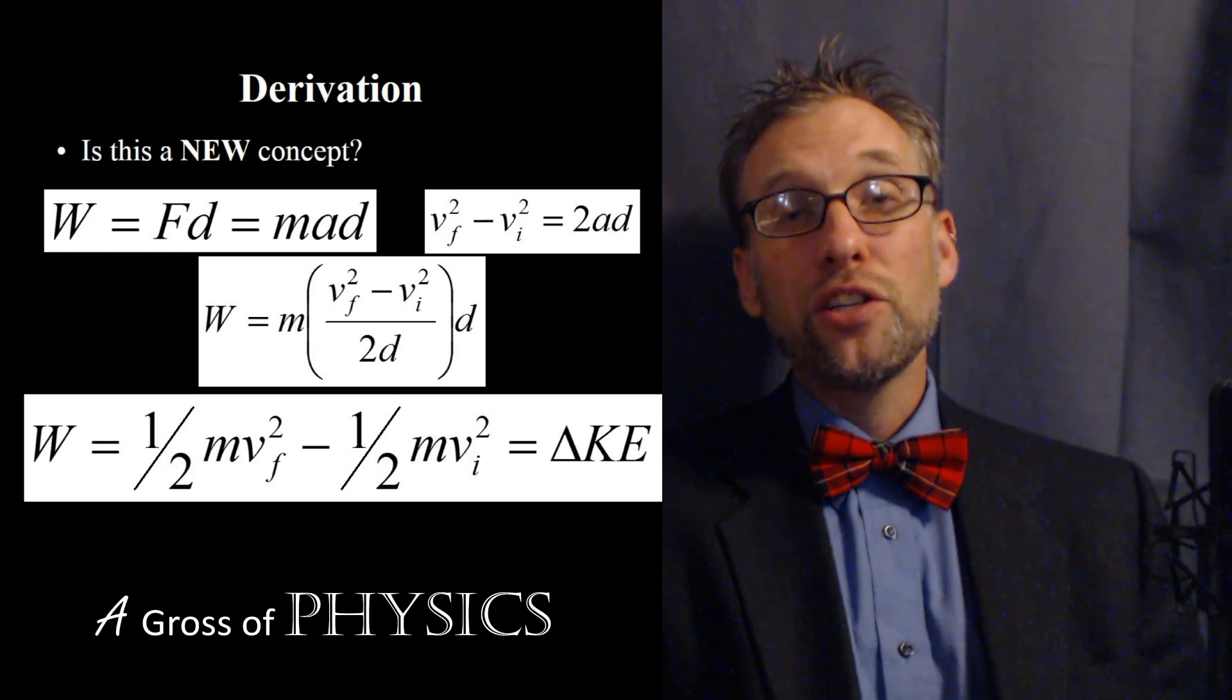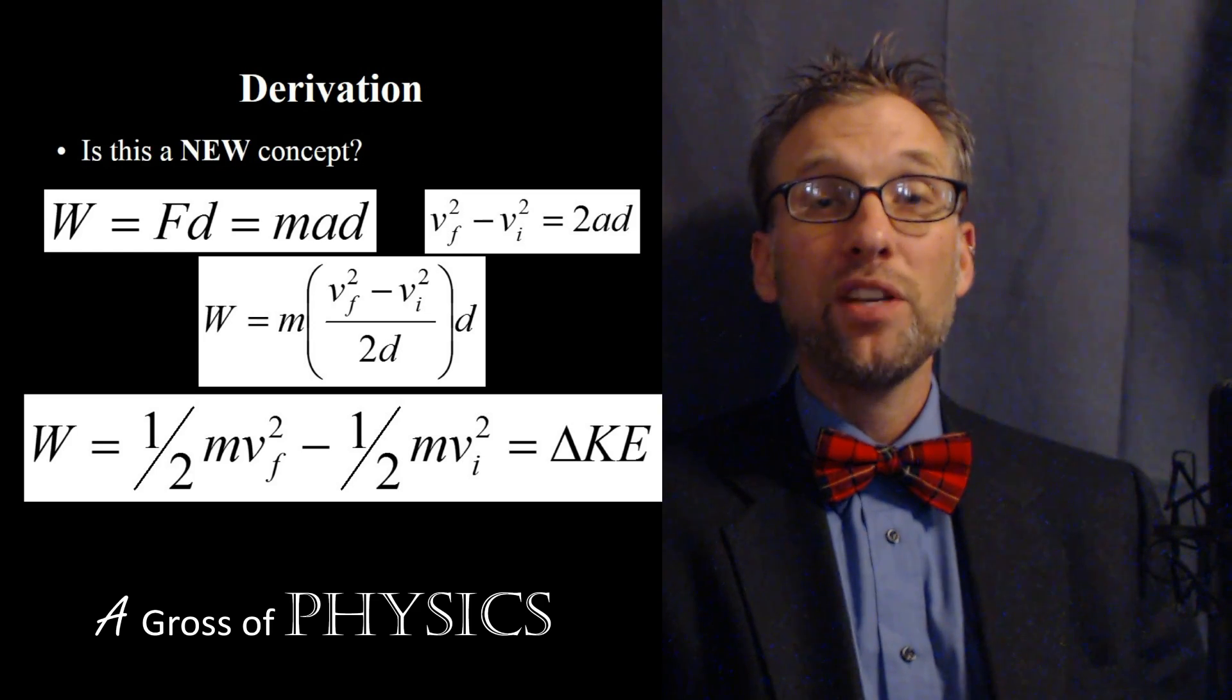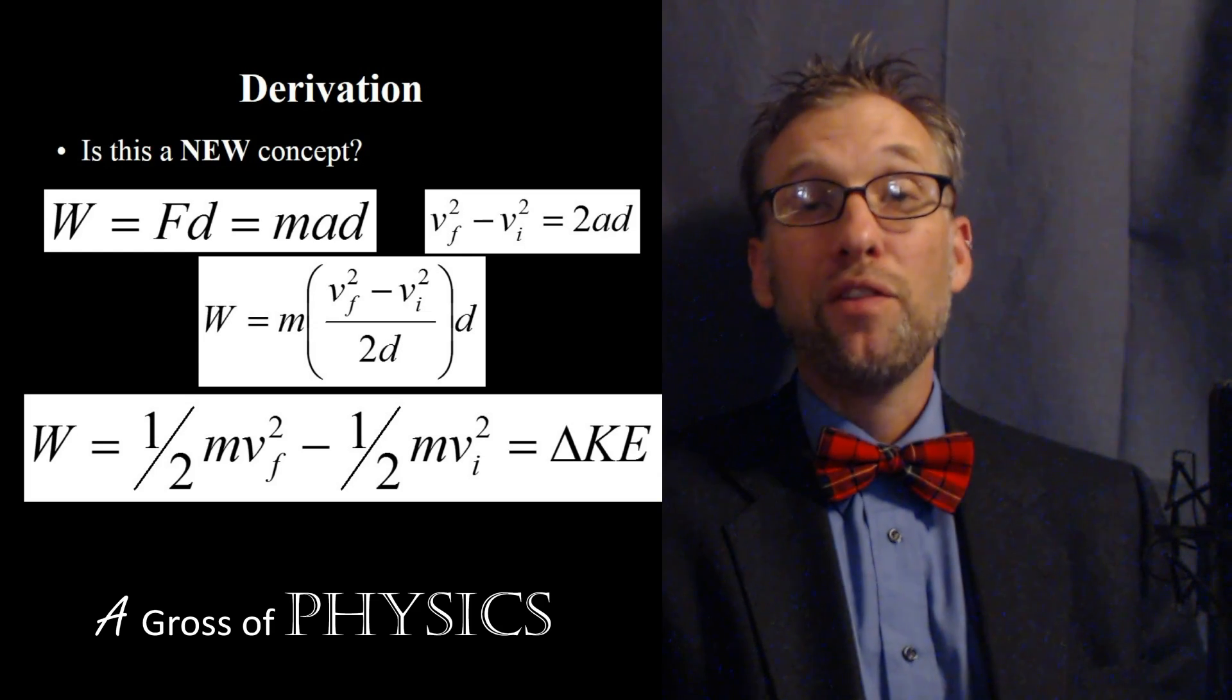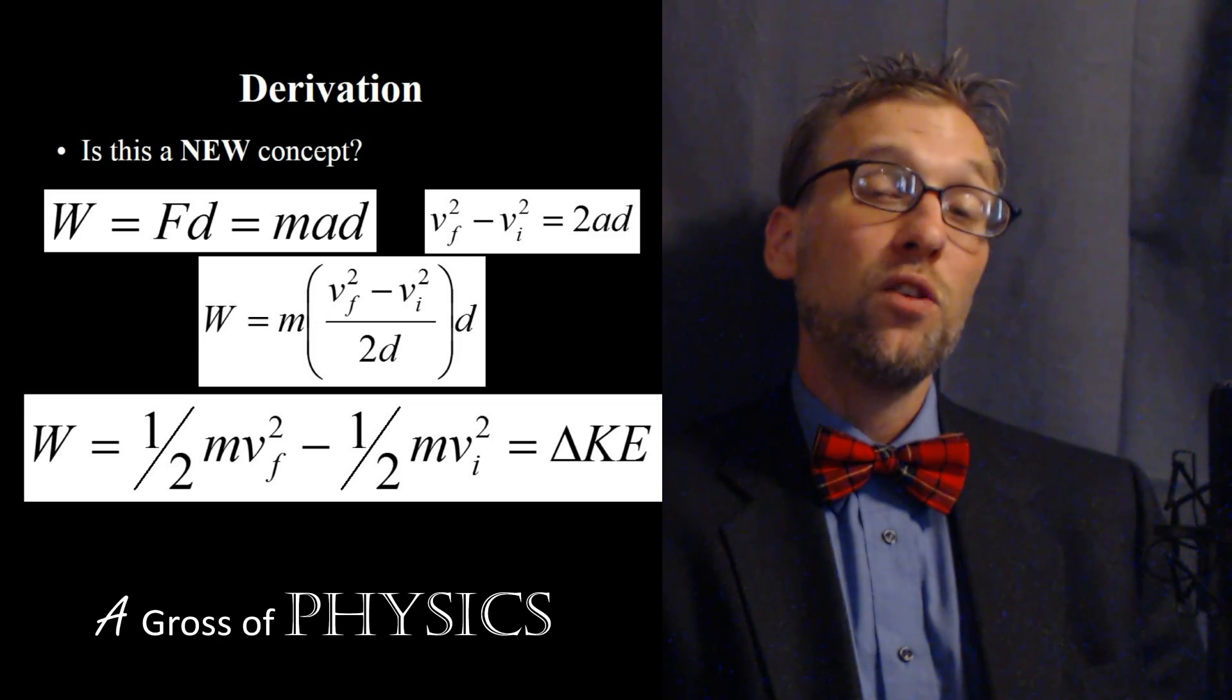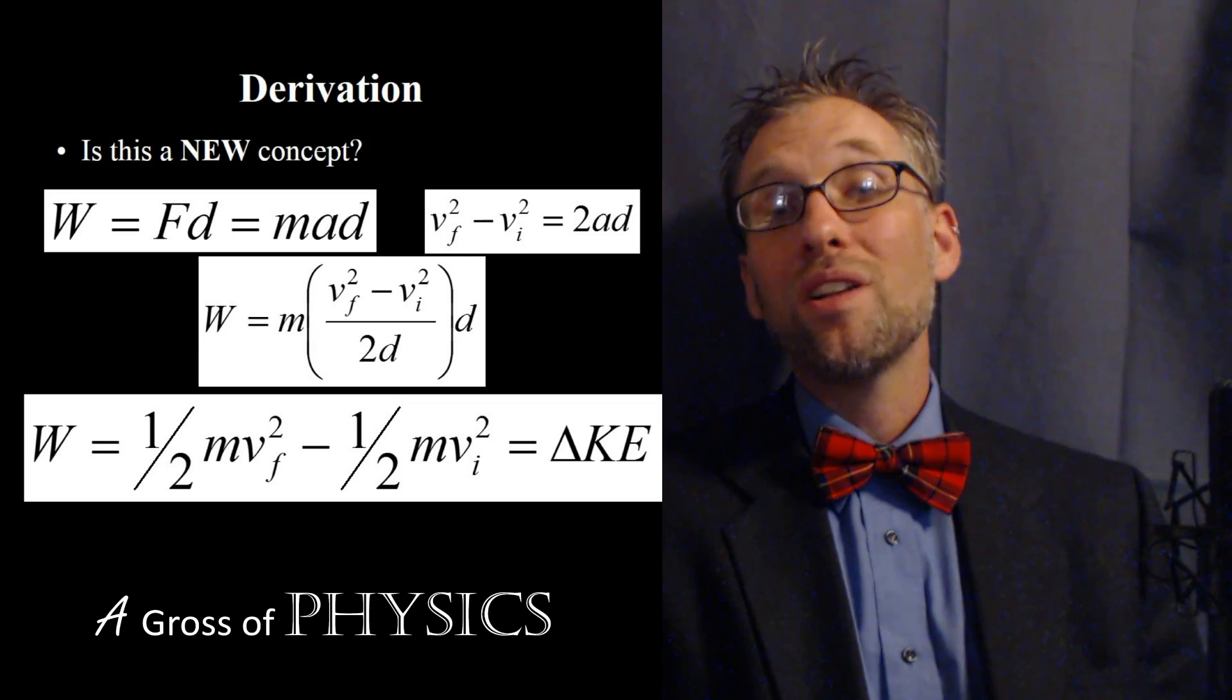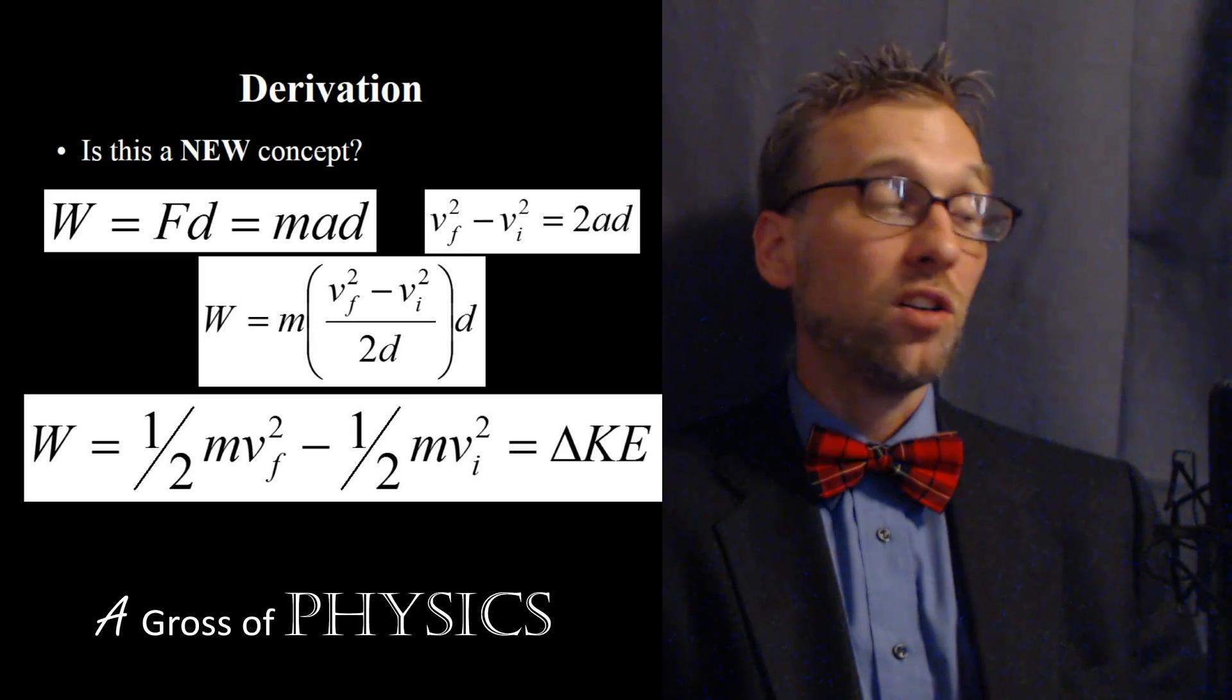So the kinetic energy, which is one half mv squared final, minus one half mv squared initial to change, is no different than combining work equals mad and vf squared minus vi squared equals 2ad. The combination of those two equations gets us this single equation. And as we learned earlier, if you can solve something in one step, you have less chance to make a mistake. So it's good to have this at our disposal.